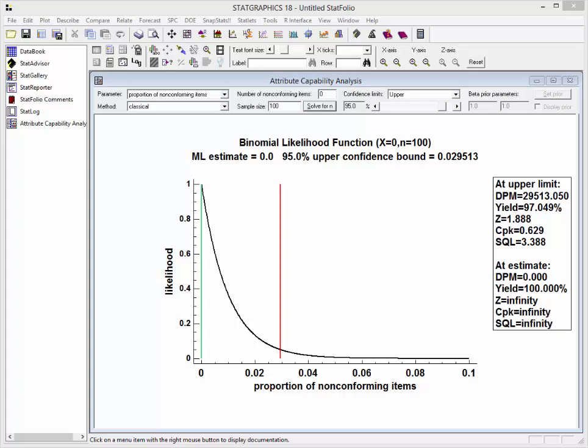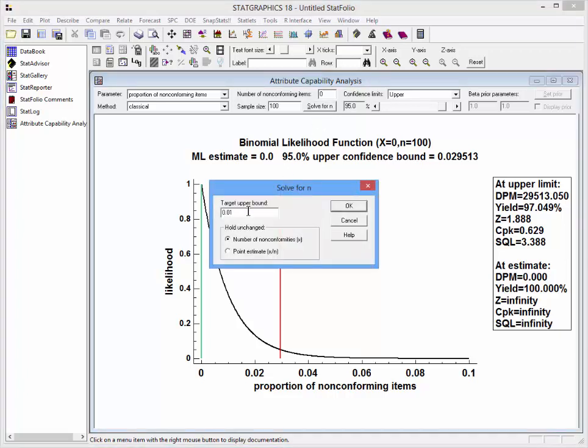Returning to StatGraphics 18, I'll now go up to the statlet toolbar and press the button labeled solve for n. Where it asks for the target upper bound, I'll put in 0.001. I'll tell it to leave the number of non-conformities X unchanged. In other words, I'm going to assume that if I take a larger sample, I still won't see any non-conformities.